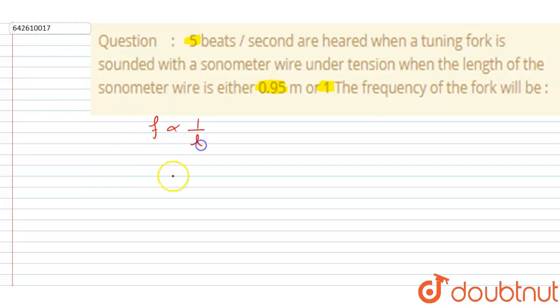So you can see l1 is 0.95 meter and l2 is 1 meter. Since l2 is greater than l1, if I compare the frequency of the two, then l1 will have a greater frequency than this l2 wire. So I will write f1 is greater than f2.